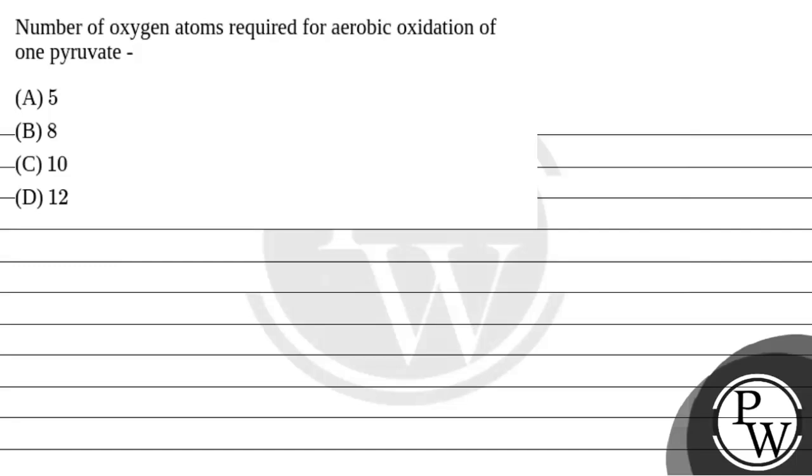Hello, let's read the question. Number of oxygen atoms required for aerobic oxidation of one pyruvate. Option A is 5, option B is 8, option C is 10, and option D is 12.